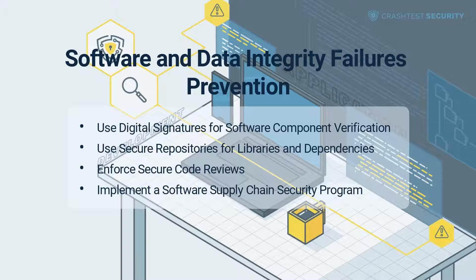Use secure repositories for libraries and dependencies. Developers and security professionals should ensure that public registries, libraries, or dependencies connect to a secure version control systems repository. In self-hosted repositories, developers should implement signed commits and multi-factor authentication to establish the origin of an update before committing changes. In addition, access roles for each repository should be appropriately defined, allowing only developers with valid privileges to deploy code.